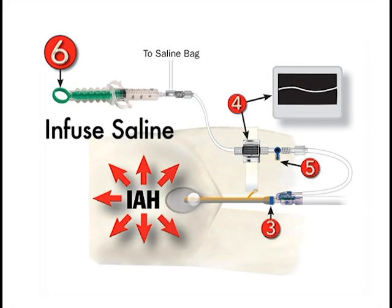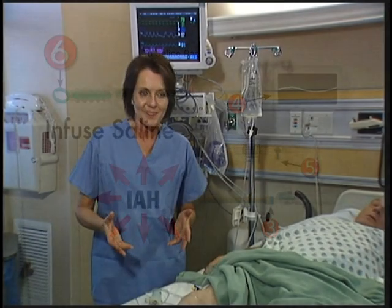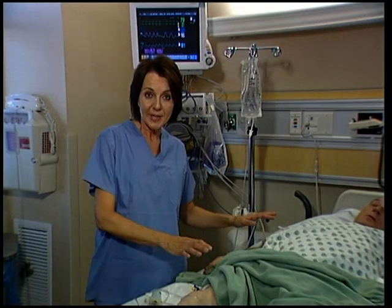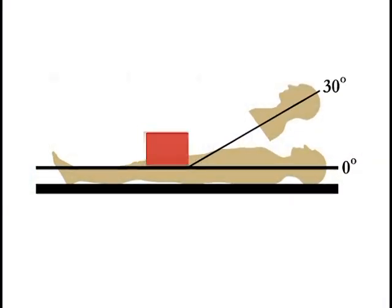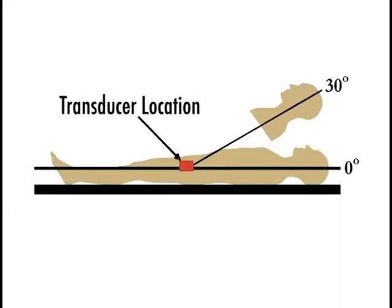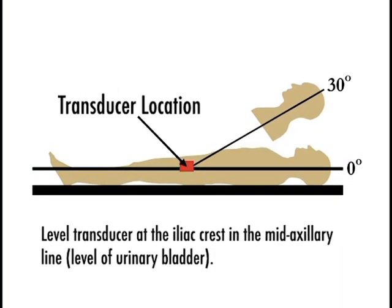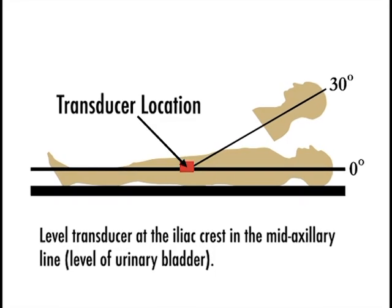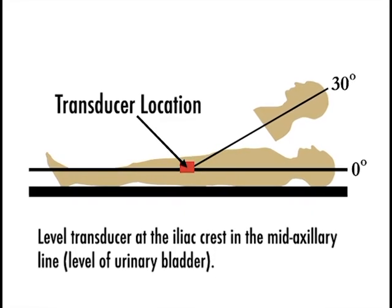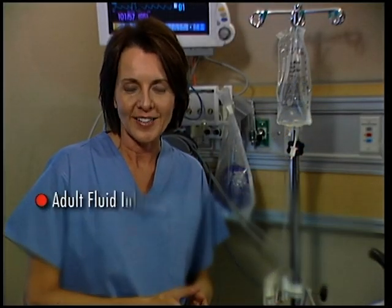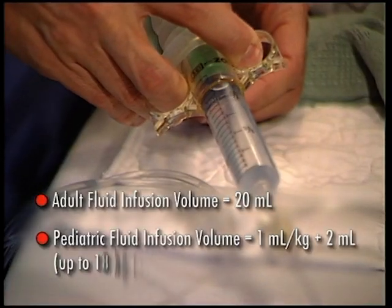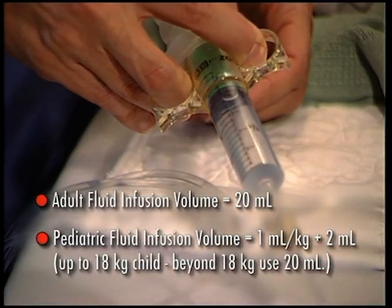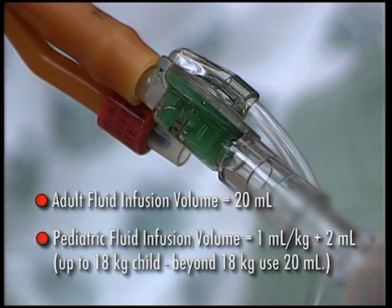Measuring intra-abdominal pressure is easy. Place the patient in the supine position. Be sure the transducer is at the level of the iliac crest in the mid-axillary line. Wait for the patient to be calm, not coughing or straining. For adults, infuse 20 milliliters of saline within 10 seconds.